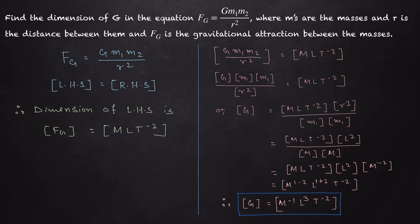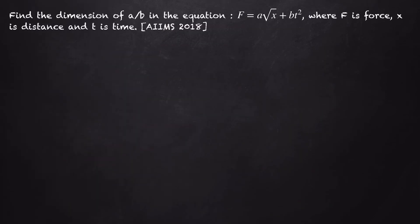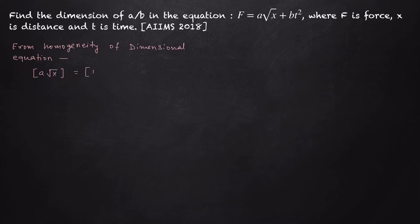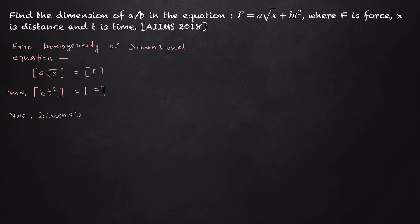Now let's solve this problem: find the dimension of a/b in the equation F = a√x + bt², where F is force, x is distance, and t is time. From homogeneity of the dimensional equation, the dimension of each term on the right-hand side must equal the dimension of the term on the left-hand side. So the dimension of a√x must equal the dimension of F, which is MLT⁻².